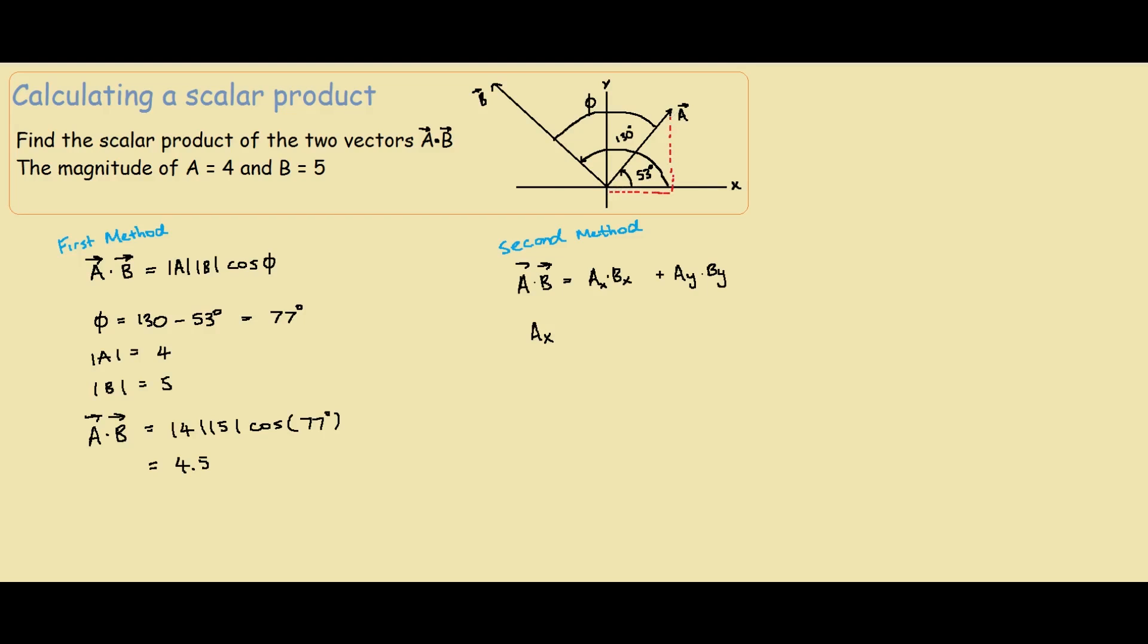Since we know A is 4, we just do 4 cos 53 degrees, which comes up to be 2.4. And we know Ay equals 4 sin 53 degrees, which comes up to be 3.2.